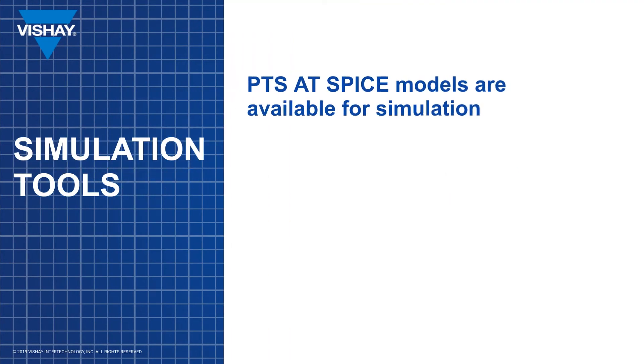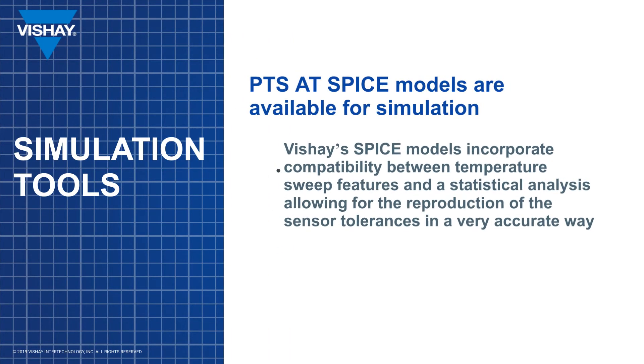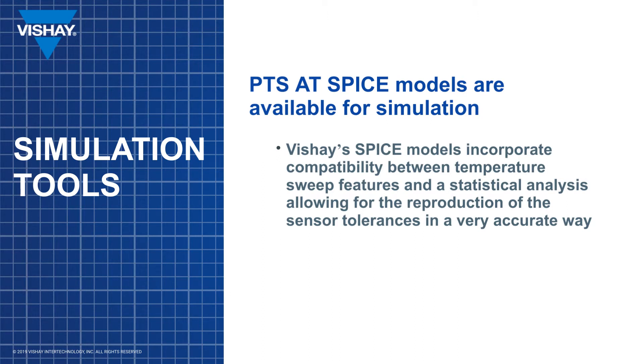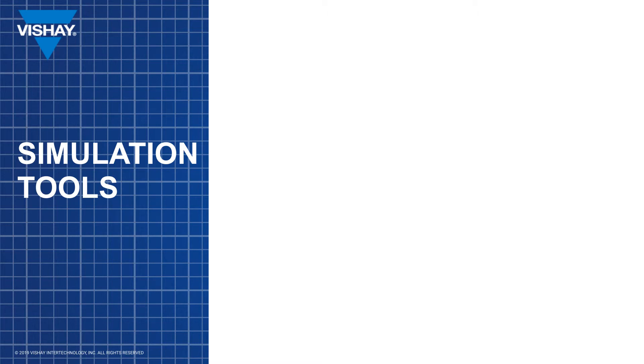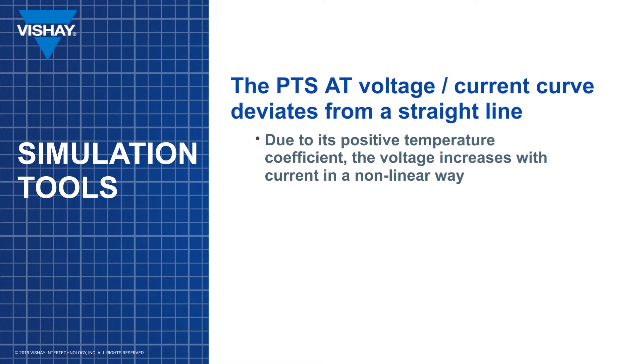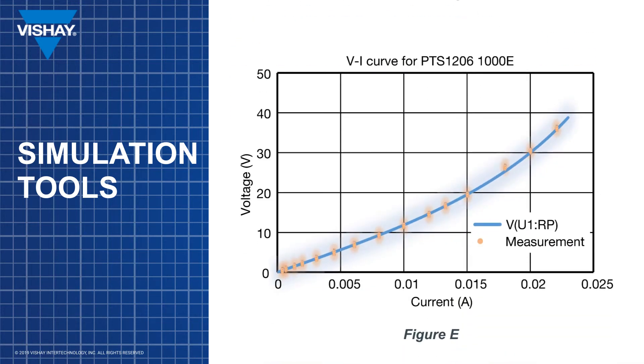Vishay offers SPICE models for the PTS-AT that incorporates temperature sweep on a continuous range with a statistical analysis allowing for very accurate simulation including sensor tolerances. In order to show functionality of the SPICE models, a simulation on the PTS-AT was performed and compared against experimental measurements. Due to the positive temperature coefficient, the voltage of the PTS-AT increases with current in a non-linear manner. Figure E shows the voltage versus current curve for a 1K ohm PTS-AT 1206K size. The simulation curve is blue and the measurement points are orange.